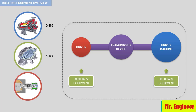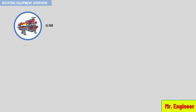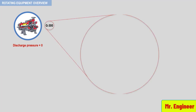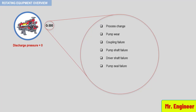Consider the following example. A call from the unit shift manager may state that the G300 discharge pressure is zero. So, what are the possible causes? A few are: process change, pump wear, coupling failure, pump shaft failure, driver shaft failure, pump seal failure, process valve closed, or steam inlet valve closed, if the driver is a steam turbine.